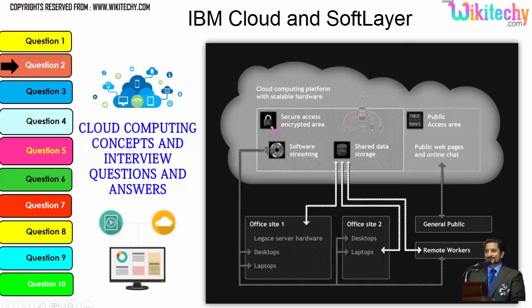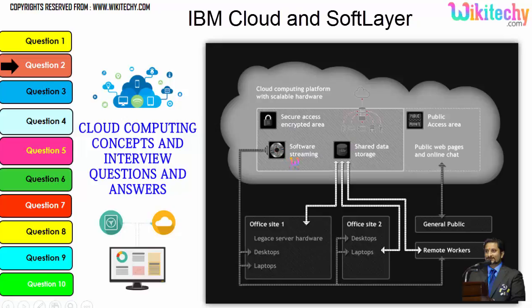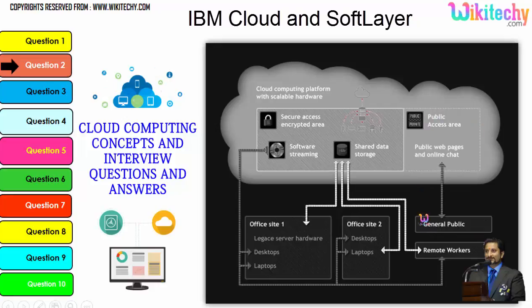Cloud computing has a public access area — public web pages for end users — and also secure data access, shared data storage, and software streaming. Companies can use it as a private kind of environment and the public can use it to access web pages or websites. This is how cloud computing works.